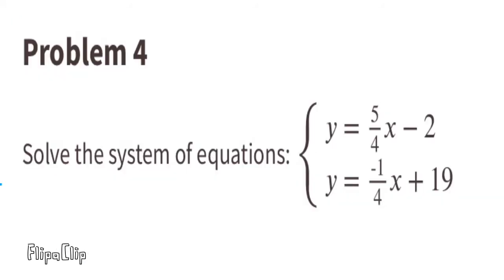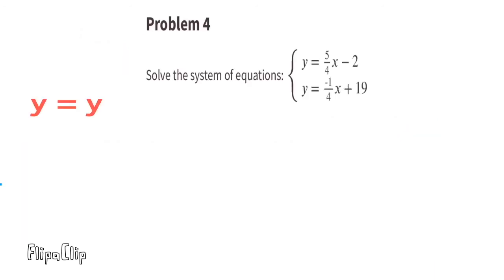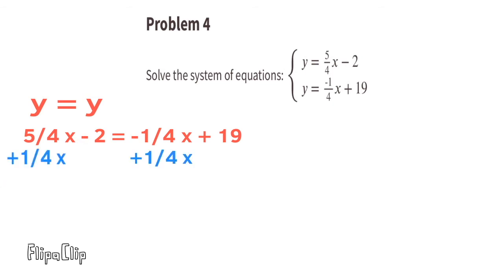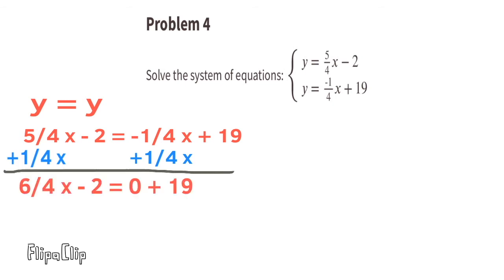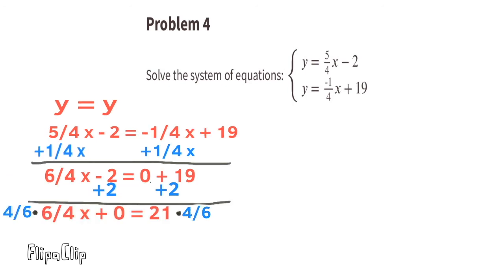Problem number 4: Solve the system of equations — y equals 5/4 x minus 2, and y equals negative 1/4 x plus 19. Let's make y equal y so the expressions equal one another. Add 1/4 x to both sides, then add 2 to both sides. Multiply both sides by 4/6, and x equals 14.